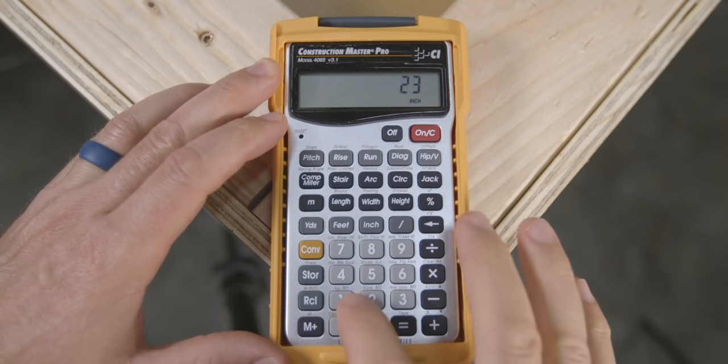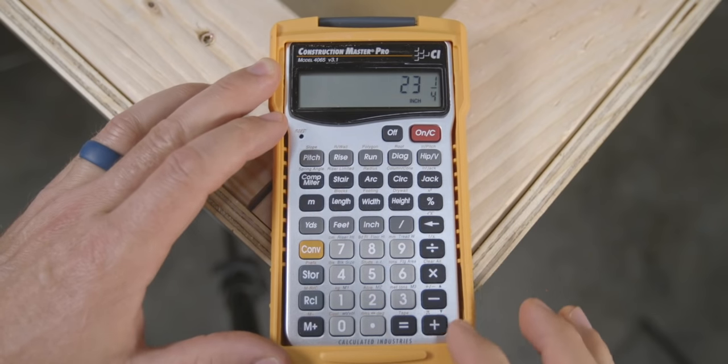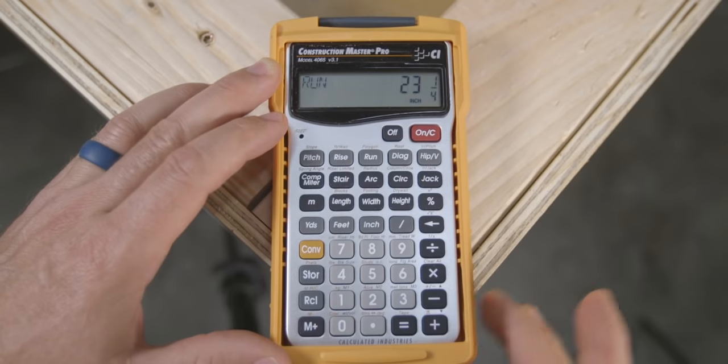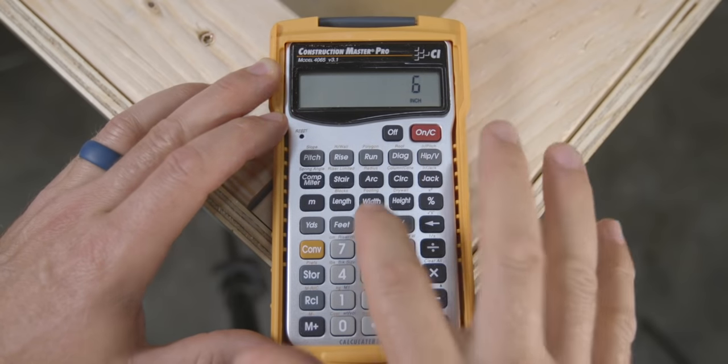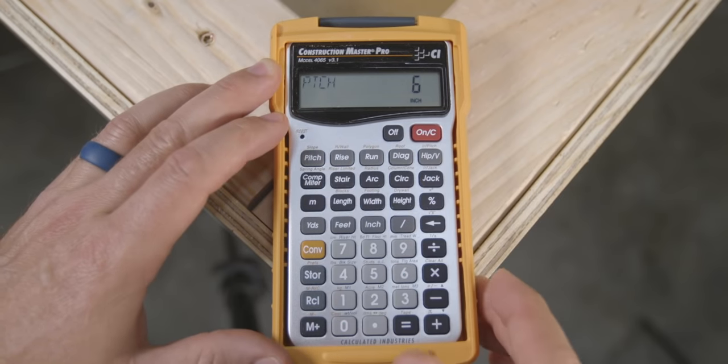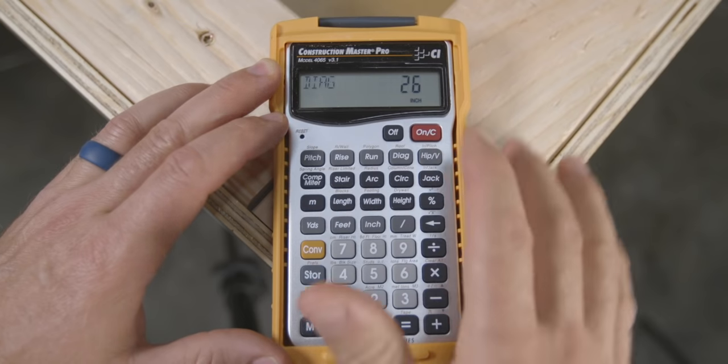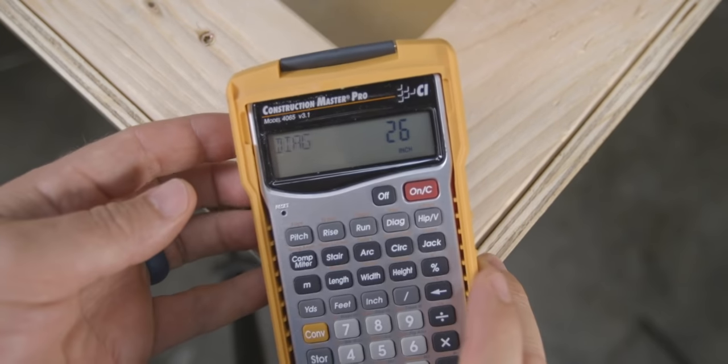On the calculator type 23 and 1 quarter inch and press the run button. Then type six inches and then the pitch button followed by the diagonal button for a measurement of 26 inches.